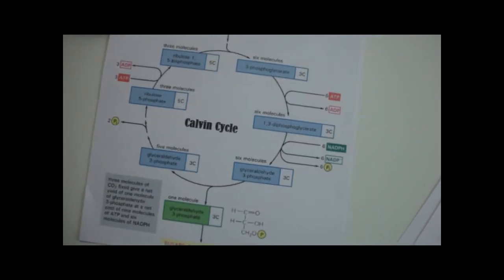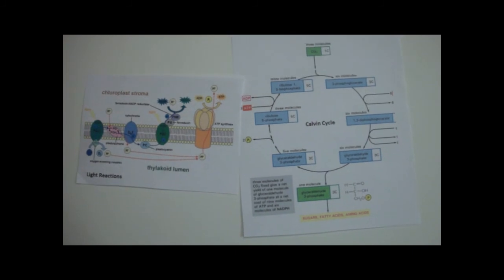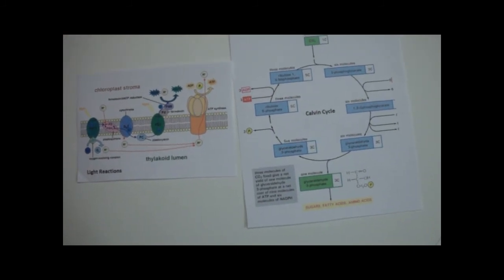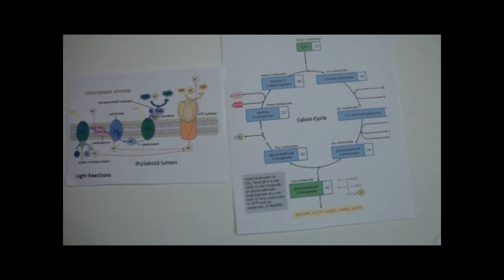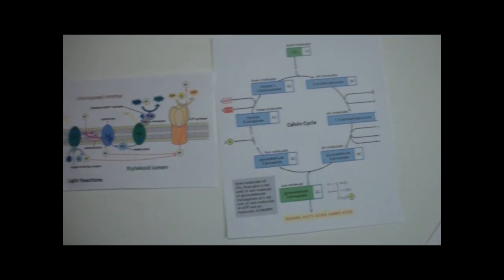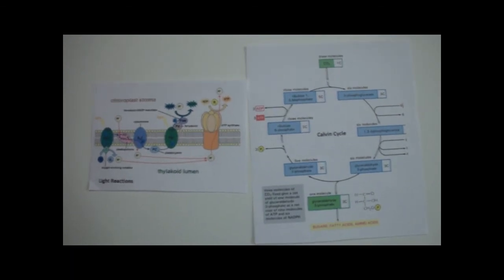Light reactions and the Calvin cycle are both necessary to photosynthesis. The light reactions act as the all-important energy source for the Calvin cycle. The Calvin cycle relies on light reactions for ATP and NADPH, and the plant relies on the Calvin cycle to convert carbon dioxide into usable sugar.